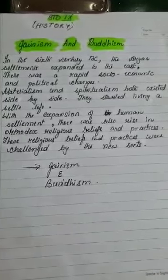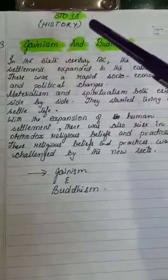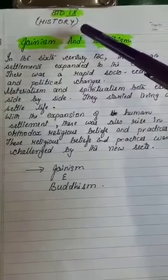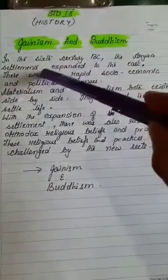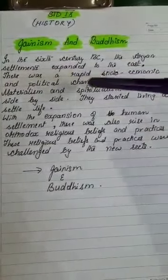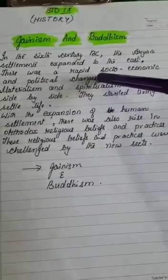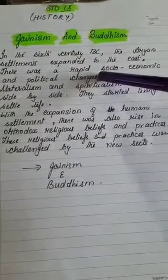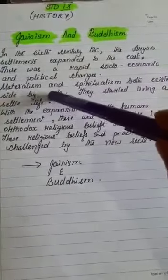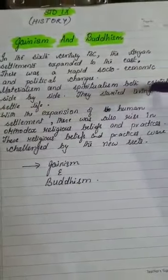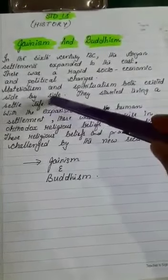Today, I am going to start the chapter Jainism and Buddhism of class 9 history. In the 6th century BC, the Aryan settlements expanded to the east. There was rapid socio-economic and political change. This was the period of the later Vedic. Materialism and spiritualism both existed side by side, and people started living a settled life.